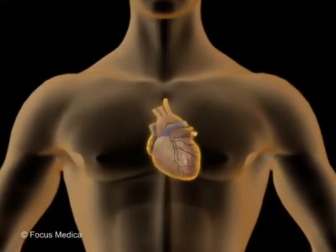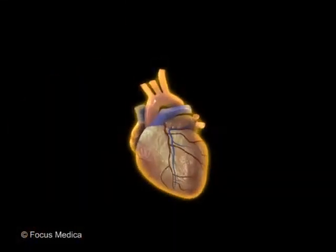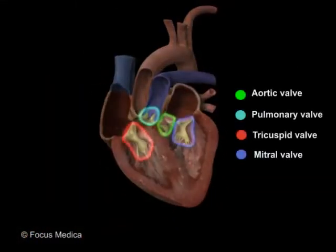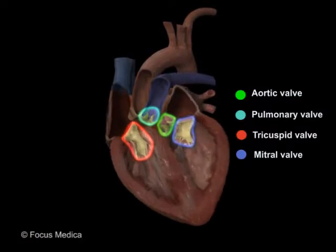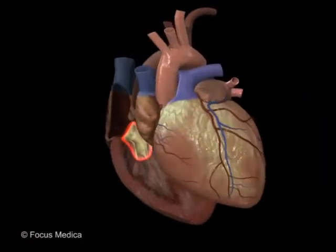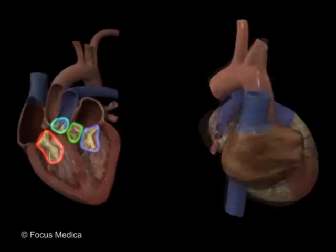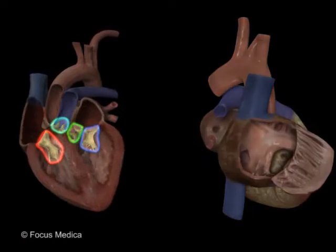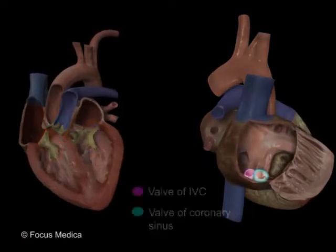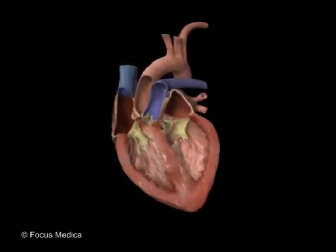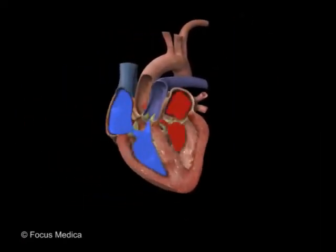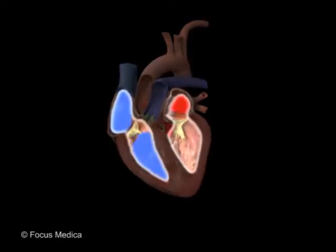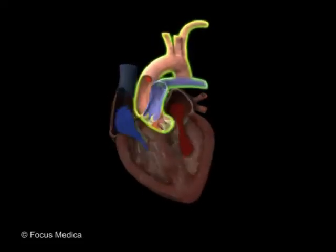The human heart has four major valves and two minor valves across the bloodstream, circulating through its chambers and major vessels.